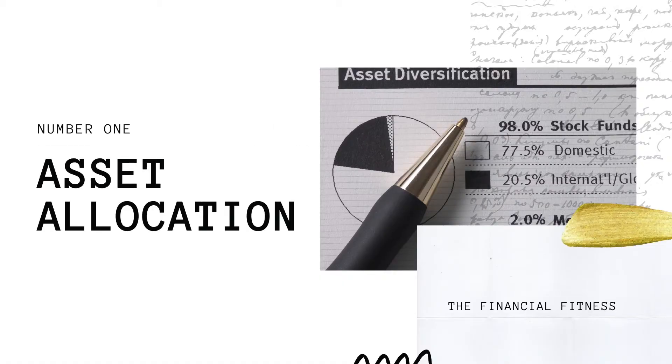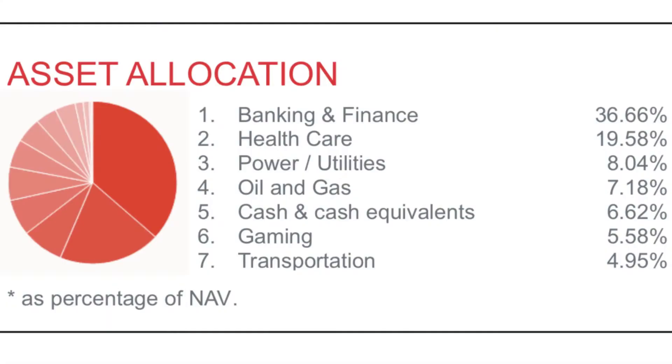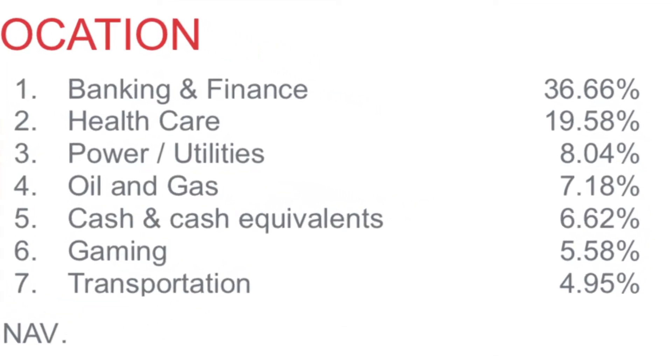Number 1: Asset Allocation. This section highlights the segments involved in an investment, like technology, consumer products, or banking. It also shows the weight of investment that the fund manager puts into each segment. For example, 30% of the fund could be allocated to technology-related companies. By investing in various industries, it helps minimize the risk for investors in case any of the sectors face a crisis.